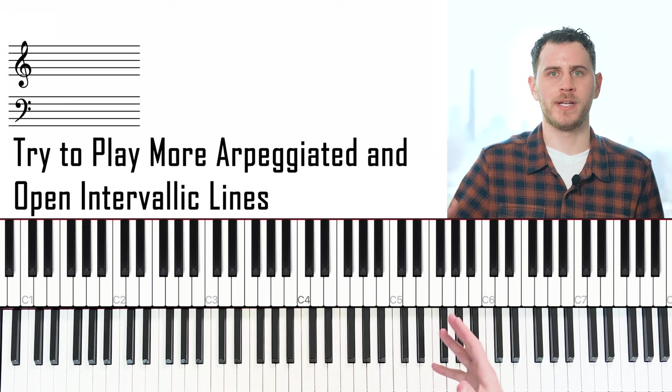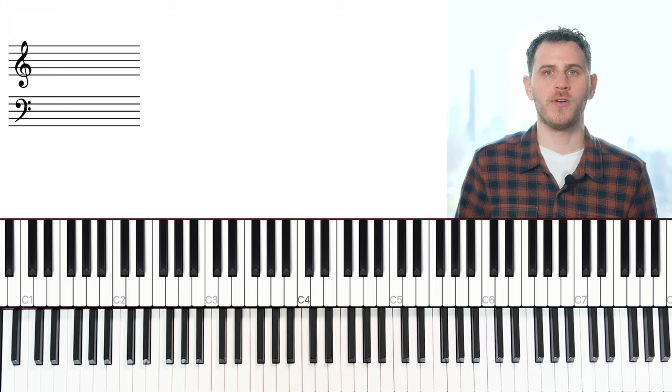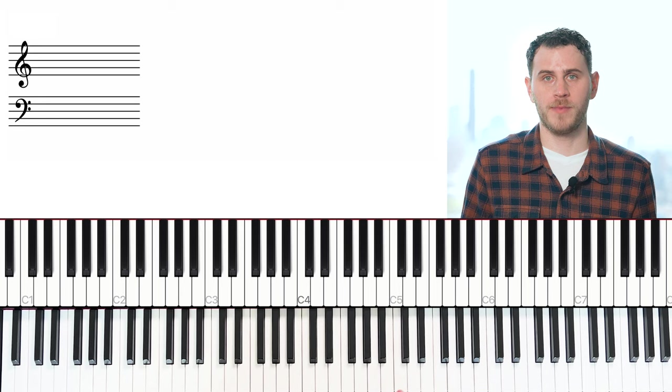But plain and simple, all we're really doing here is saying we're going to avoid small clustered moments in our lines and instead try to play more arpeggiated and open intervallic lines. Alright, so now that we've actually looked at the five different styles, I want to briefly talk about how and when and why to use them in different contexts. So of course, when we play an actual bebop tune, something like Donna Lee for example, Confirmation, I'm sure that we could name bebop tunes all day here.